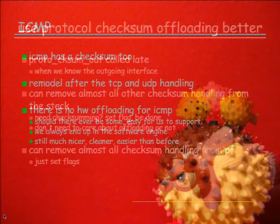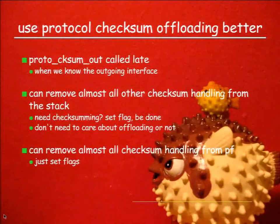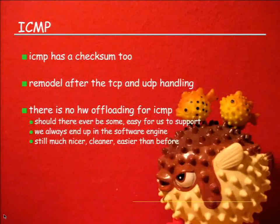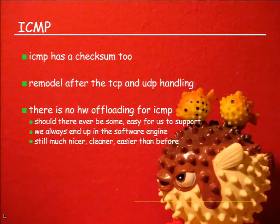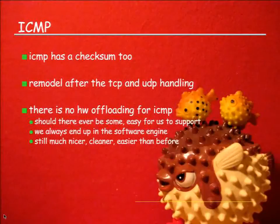This also means we can remove pretty much all checksum handling from PF itself - PF modifies the packet, sets the flag, done. There's ICMP. ICMP has a checksum as well. I remodeled that entire thing after the TCP and UDP handling. There is no hardware that has ICMP checksum offloading and it doesn't quite make sense because ICMP packets tend to be small and it's free in software. Should there ever be one, it would be trivial to implement. ICMP being the same as TCP and UDP makes the code much easier and the performance is the same anyway.